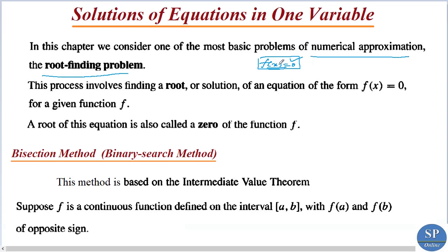The root of that equation is also called a zero of the function f. Now we can discuss the first method to find the root of this type of equation, or zero of the function f. The method is called the bisection method. This is the simplest method. It is also called the binary search method.